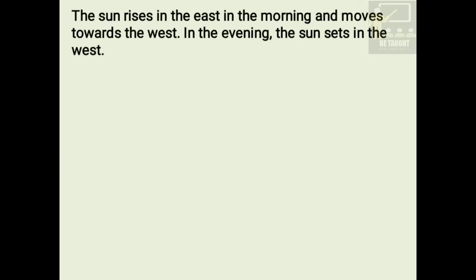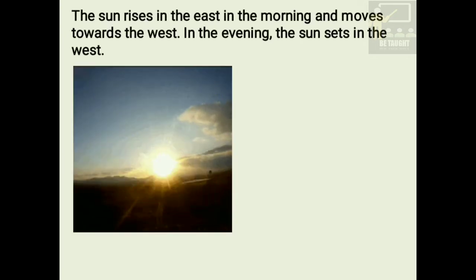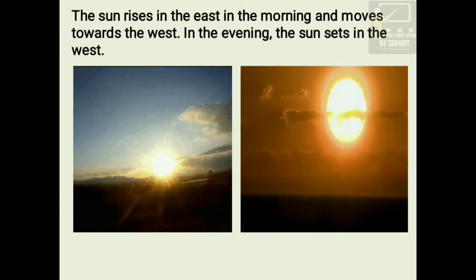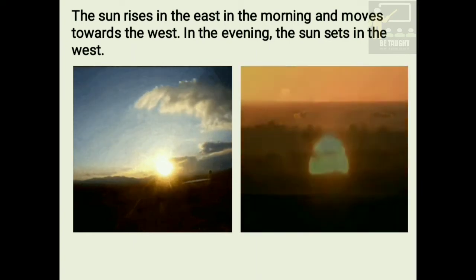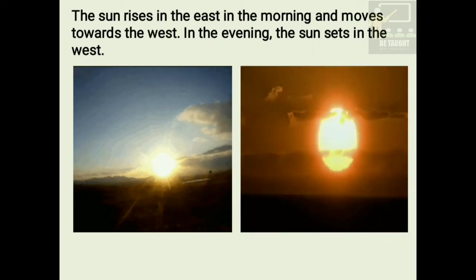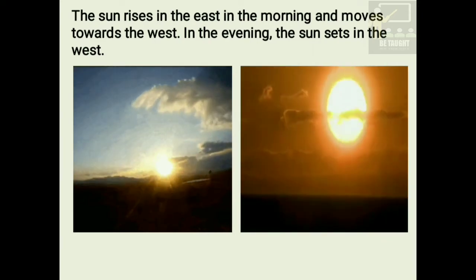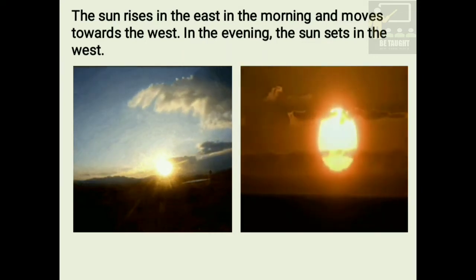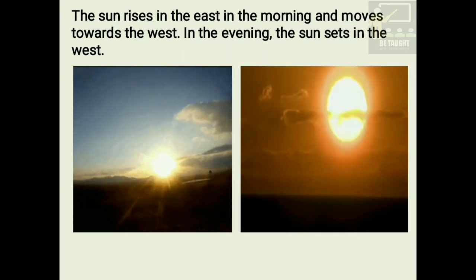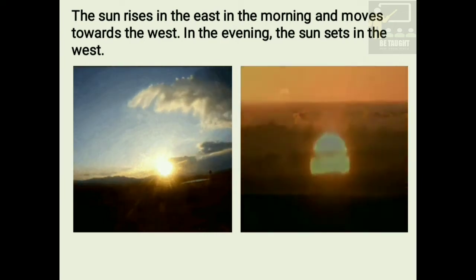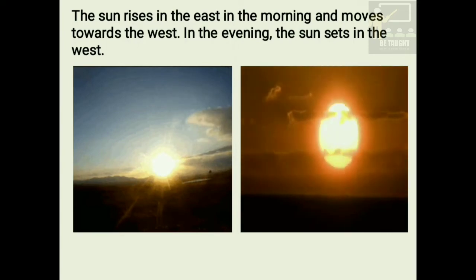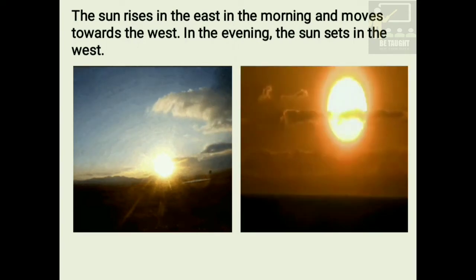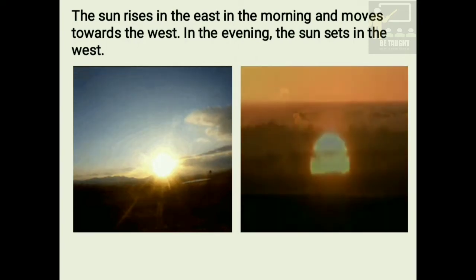Children, do you know the sun rises in the east in the morning and moves towards the west. In the evening, the sun sets in the west. So we feel that the sun goes around the earth, but that is only an impression. Actually, the earth turns around itself. That is why we have day and night on the earth.